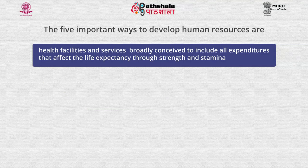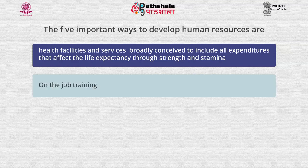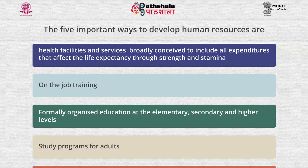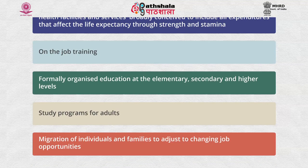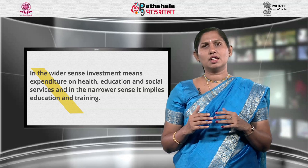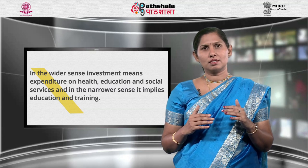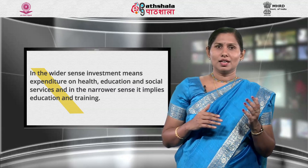The five important ways to develop human resources are: first, health facilities and services broadly conceived to include all expenditures that affect life expectancy through strength and stamina; second, on-the-job training; third, formally organized education at the elementary, secondary and higher levels; fourth, study programs for adults not organized by firms, including extension programs notably in agriculture; and fifth, migration of individuals and families to adjust to changing job opportunities. In the wider sense, investment means expenditure on health, education and social services, and in the narrower sense it implies education and training.